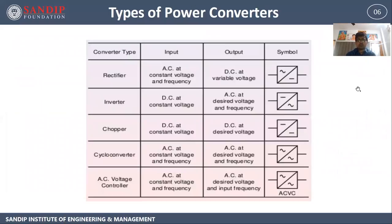Types of power converters. Converters are of five types: Rectifier, Inverter, Chopper, Cycloconverter, and AC voltage controller.